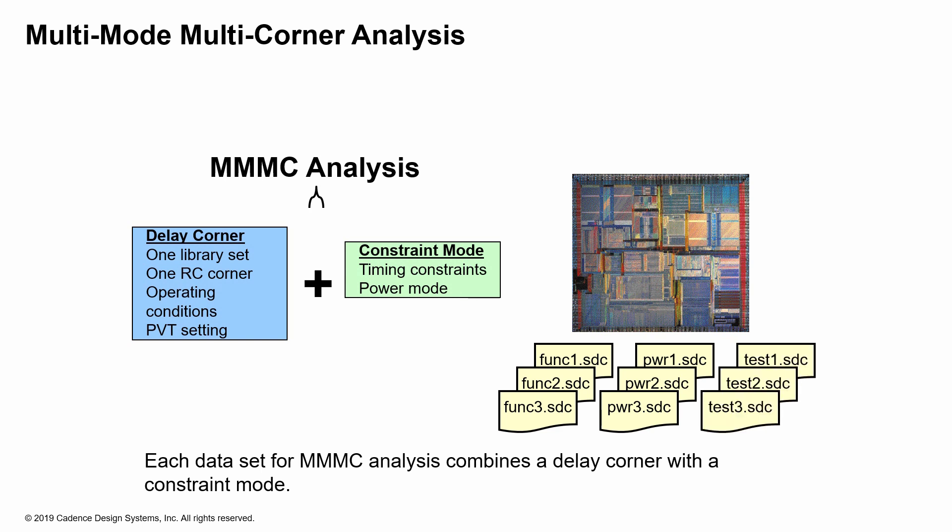Chips today have multiple standards, functionalities, and power profiles, different test modes, and also multiple constraint sets. So how do you satisfy all the constraints simultaneously and implement the chip while satisfying all these modes? This is something that obviously is required in today's designs, and the analysis is done concurrently on all the modes simultaneously.